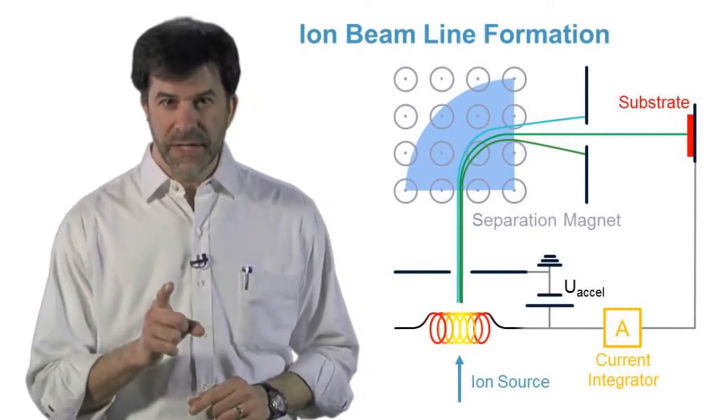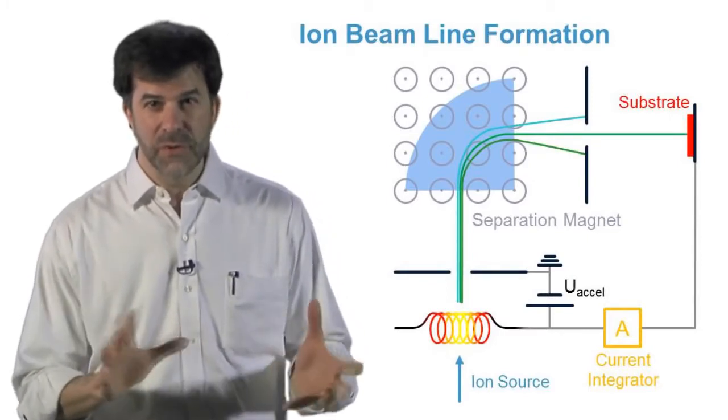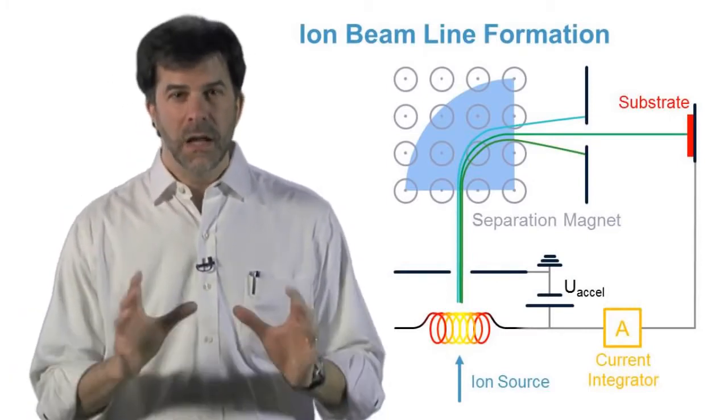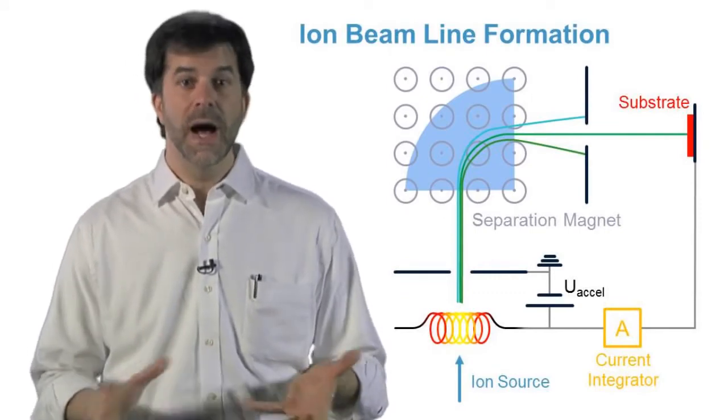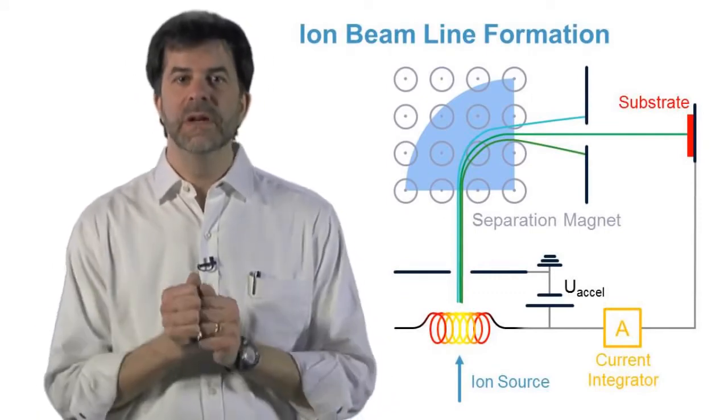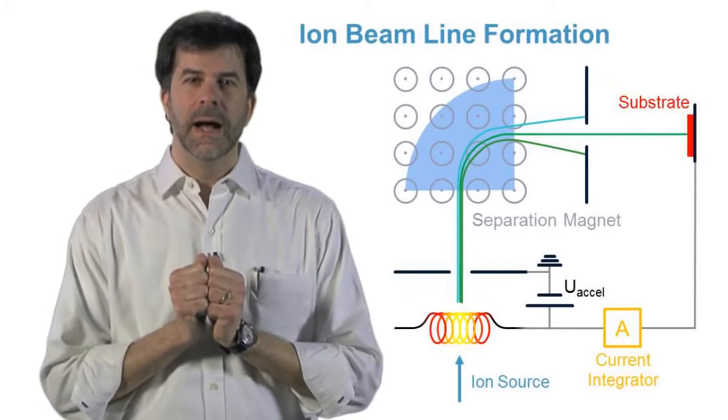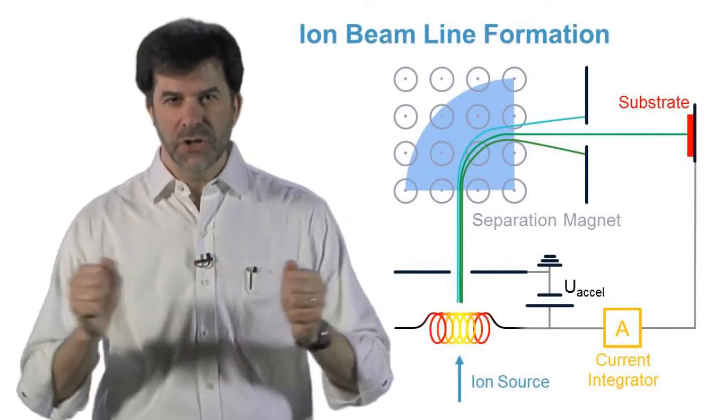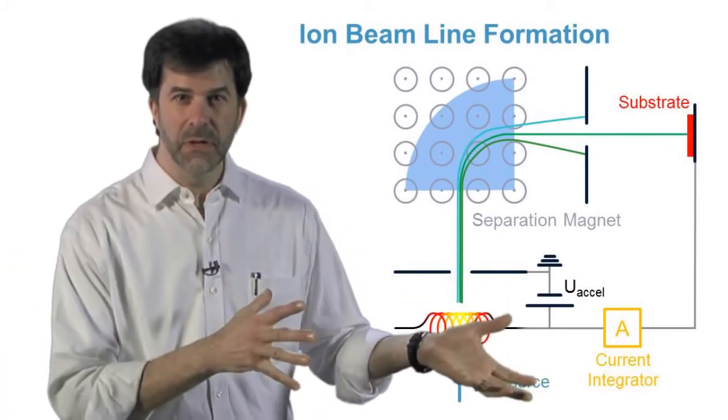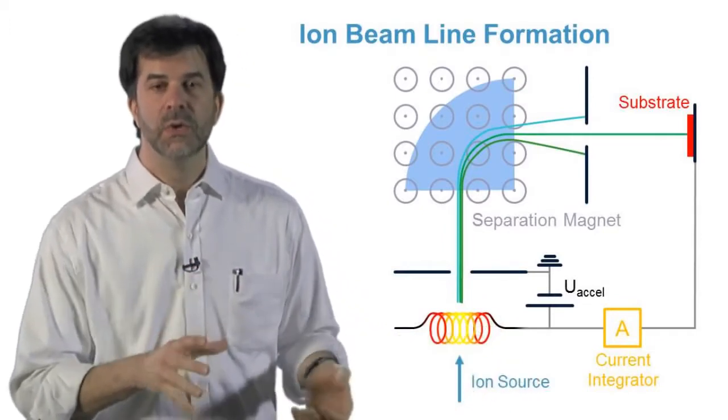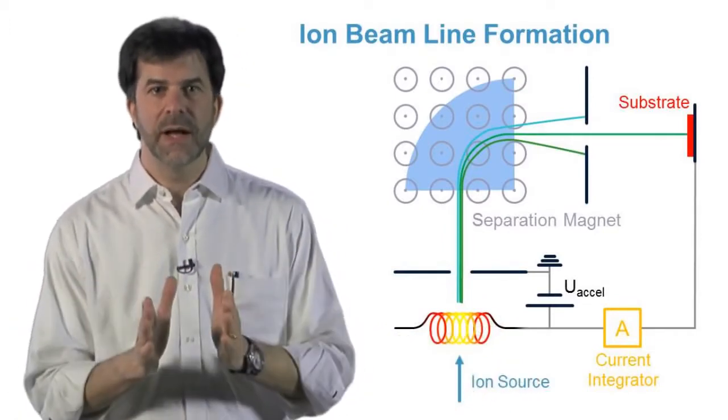The first thing to understand is that an ion beam is different from a stream of water in one very important way. Like charged particles, which is what ions are, do not like to be near one another. Opposite charges attract and like charges repel, so to get a lot of beam current for a recipe that requires a high dose, you will want to make the beam line as short as possible.